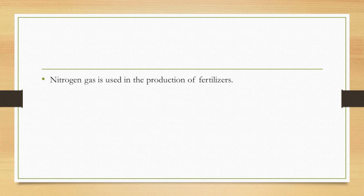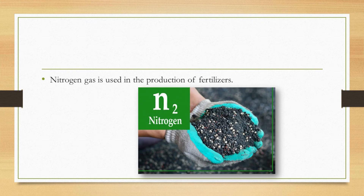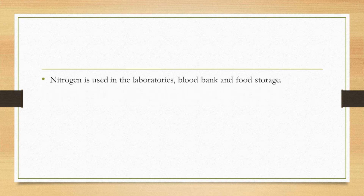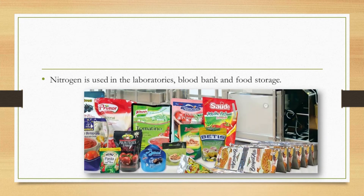Nitrogen is very important and needed for plant growth. So, nitrogen gas is used in the production of fertilizers. When applied to garden soil, nitrogen supports plants' rapid growth and healthy development of foliage and fruit. Nitrogen is used in libraries, blood banks, and food storage. Nitrogen is also used in the laboratory to control the atmosphere for highly sensitive equipment and procedures. In the case of food packaging, nitrogen is used for creating a modified atmosphere where it is applied along with carbon dioxide for preservation of fresh packaged food.